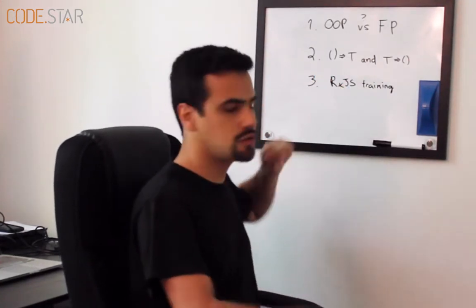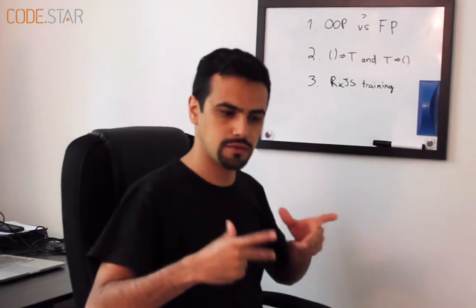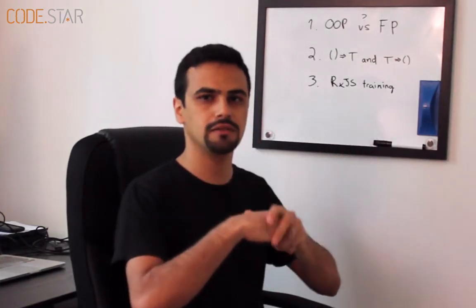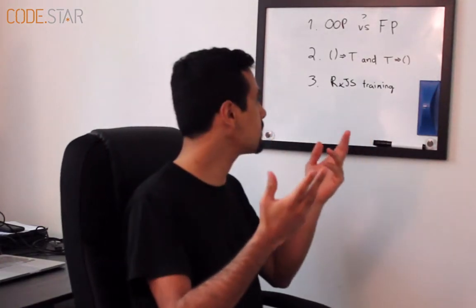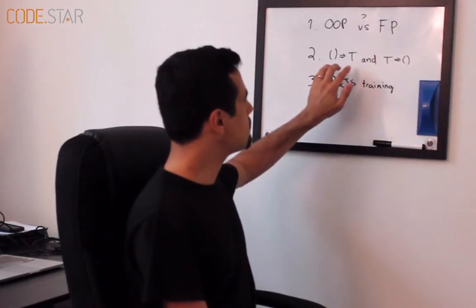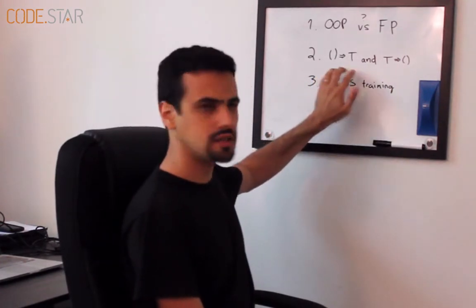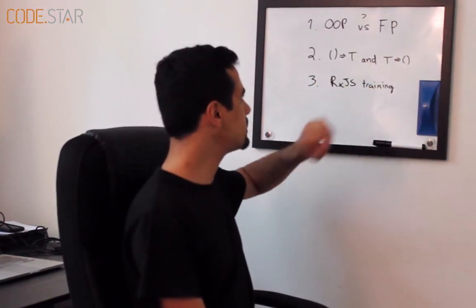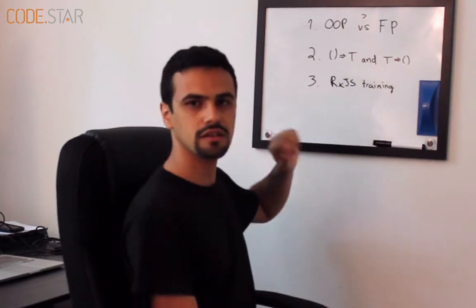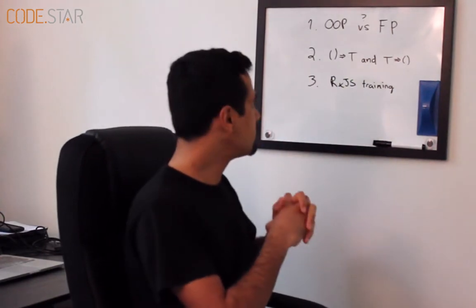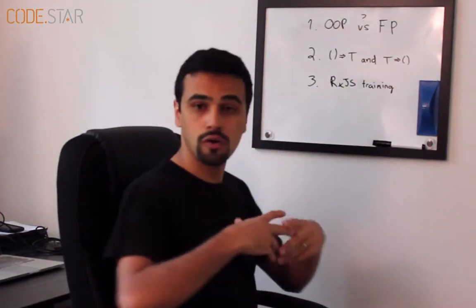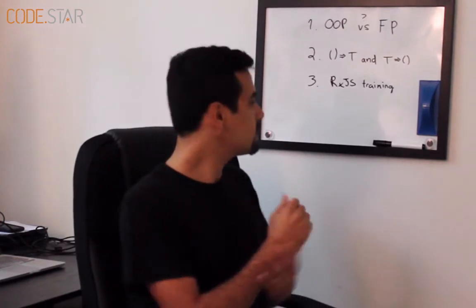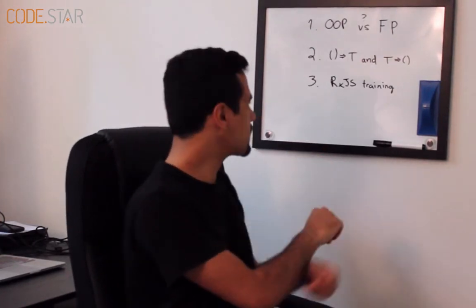The second talk is about two fundamental abstractions that you can build on top of and make almost anything else, and that's the basic getter and the basic setter. We're going to see these things in a lot of depth and then how all kinds of other things are built on top of that. It's going to be quite interesting, I promise you.